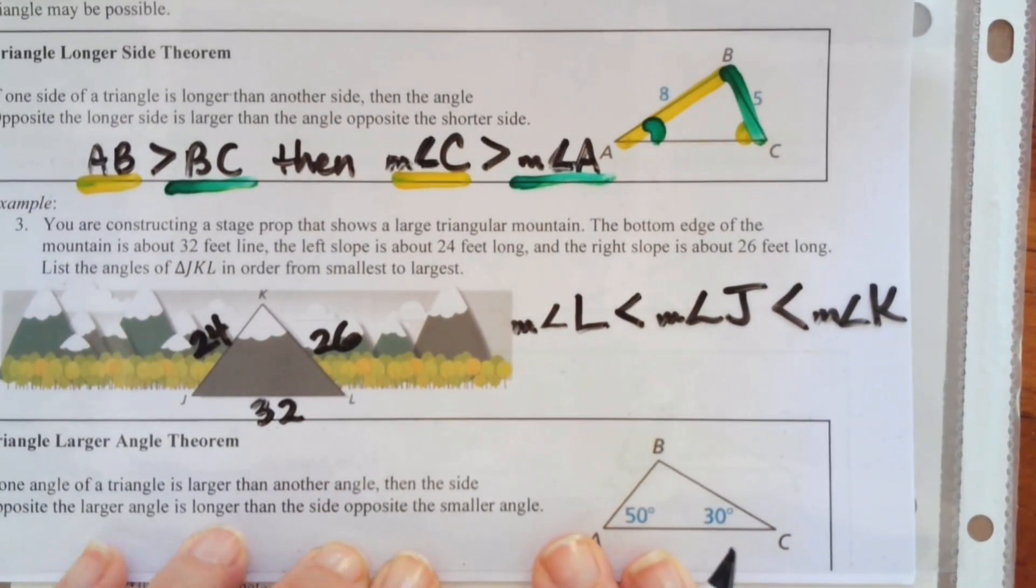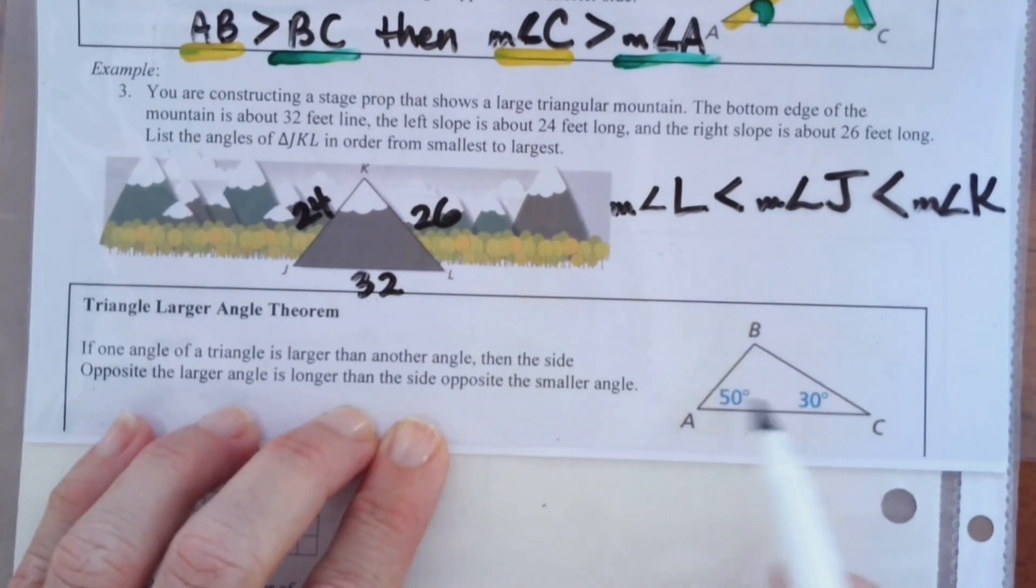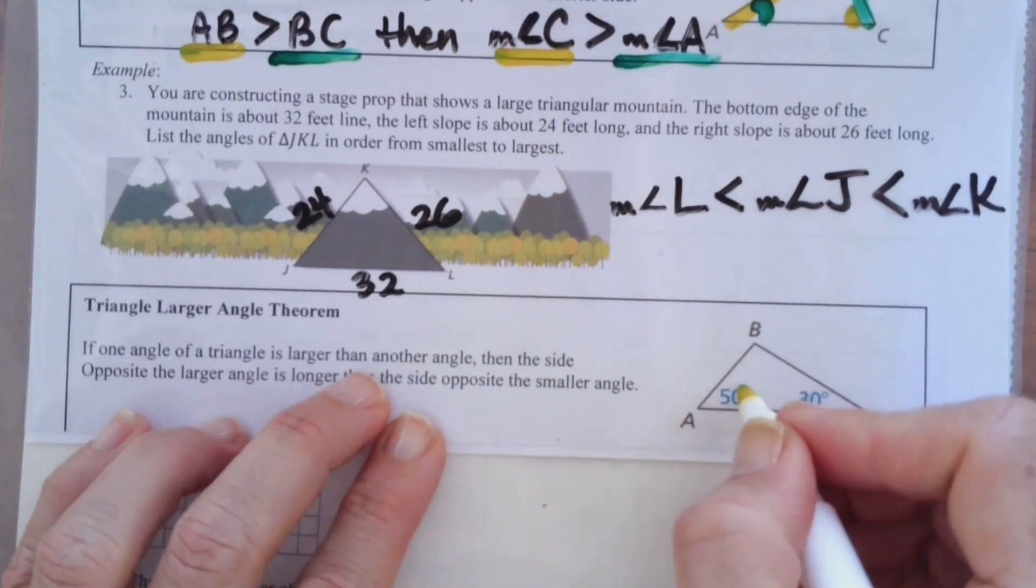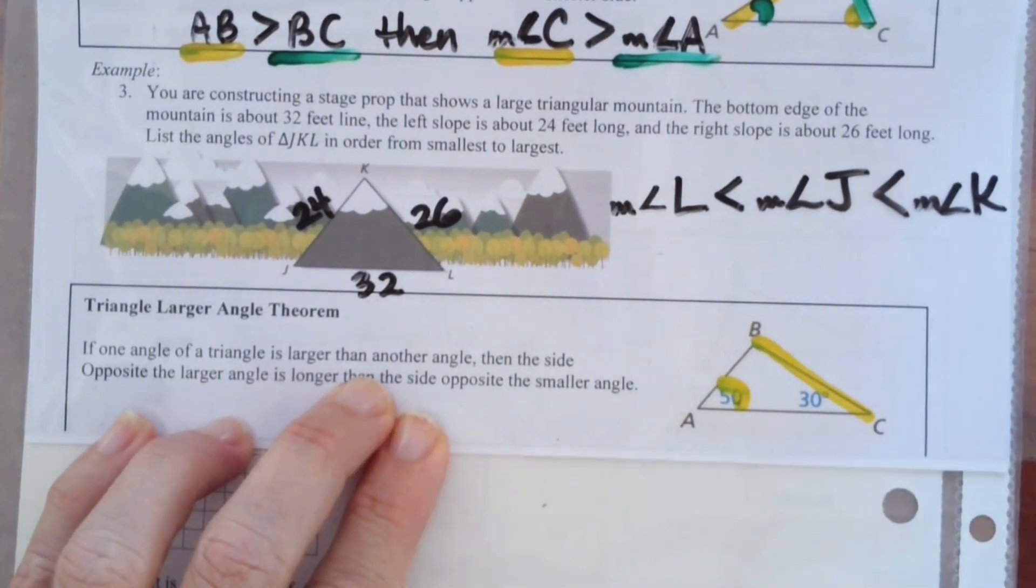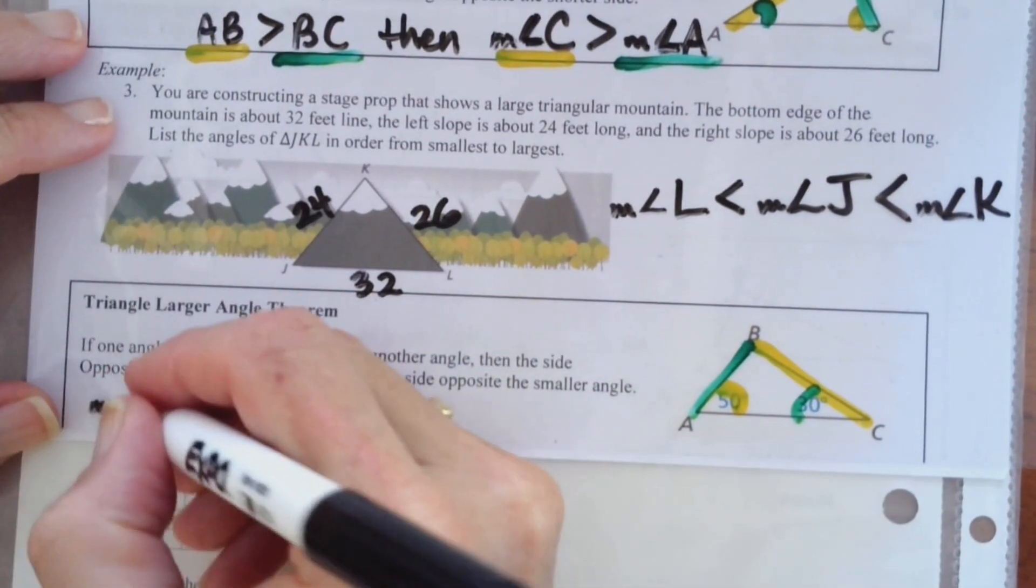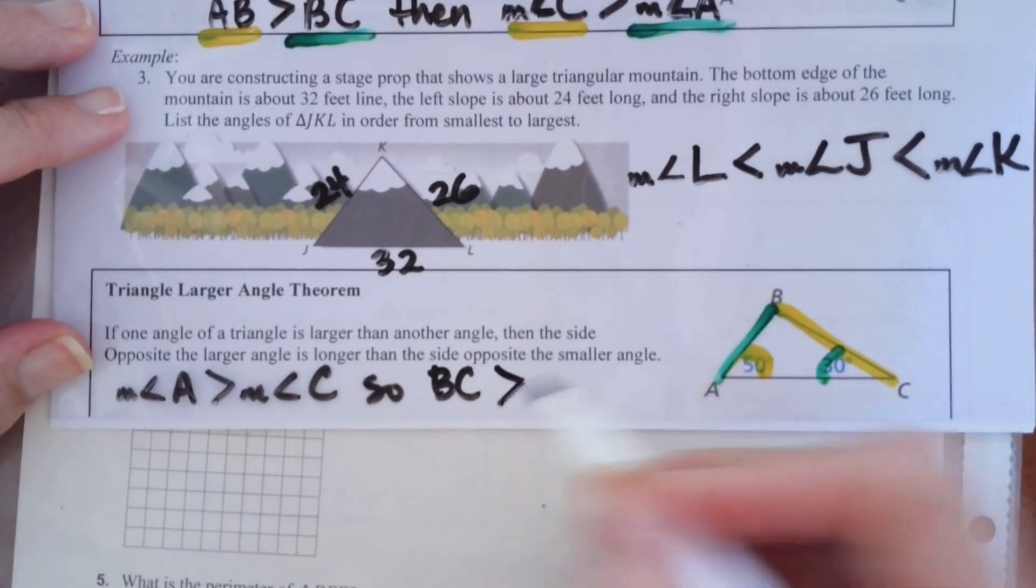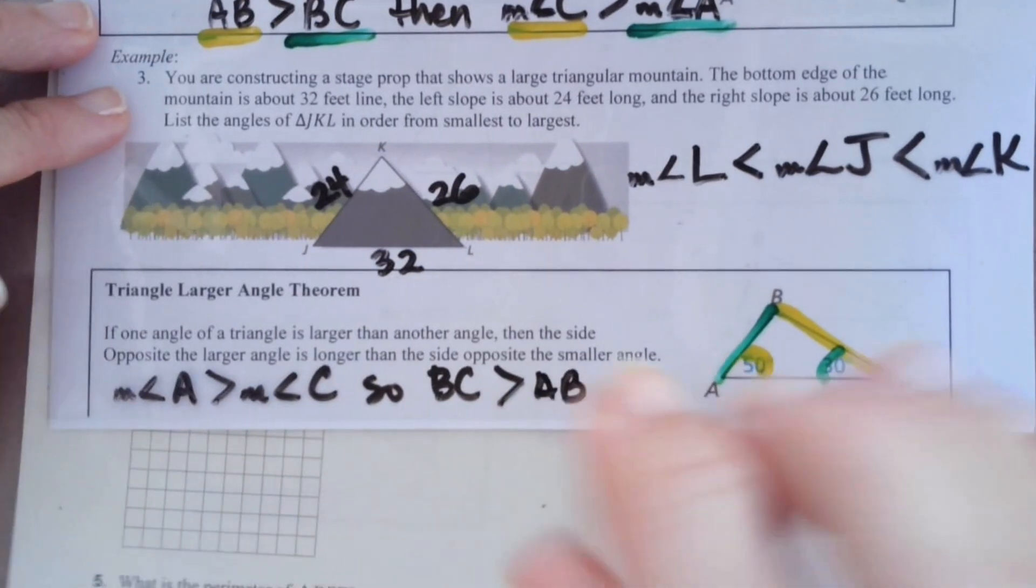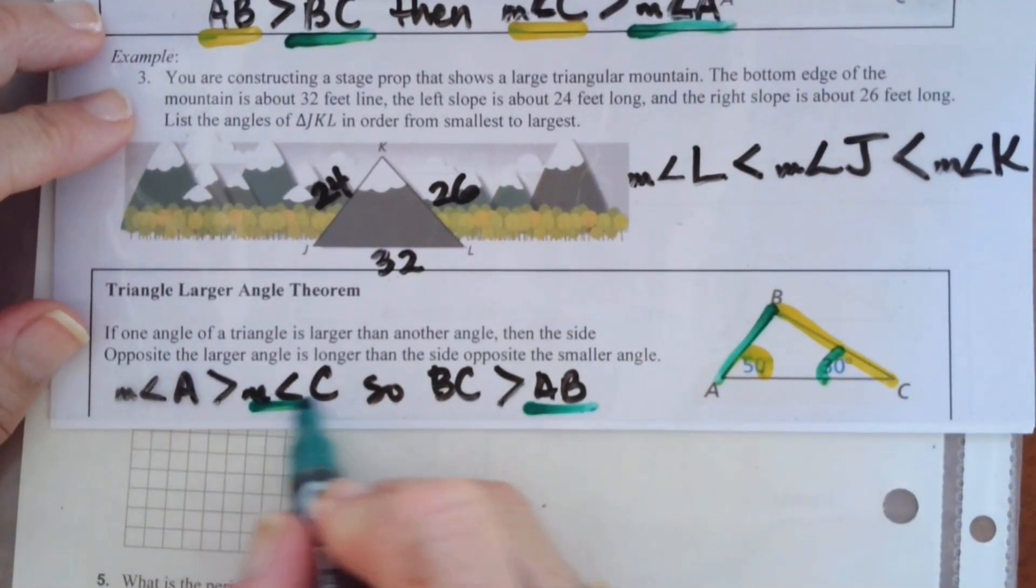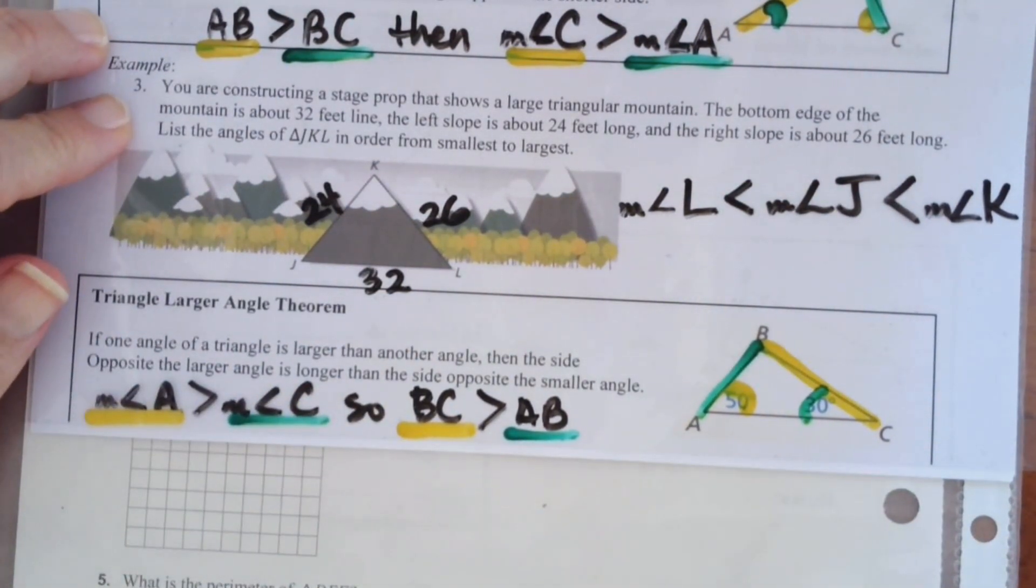It works both ways. So we also have the larger angle theorem. If one angle of a triangle is larger than another angle, so 50 is larger than 30, then the side opposite the larger angle is longer than the side opposite the smaller angle. So we'll go for the big one here. And the small one here. With our colors. So basically right here you would write well. The measure of A is greater than the measure of angle C. So that means that BC is greater than AB. And again, AB is green. C is green. Try to make this as colorful as possible. BC is yellow. And A is yellow. Any questions?